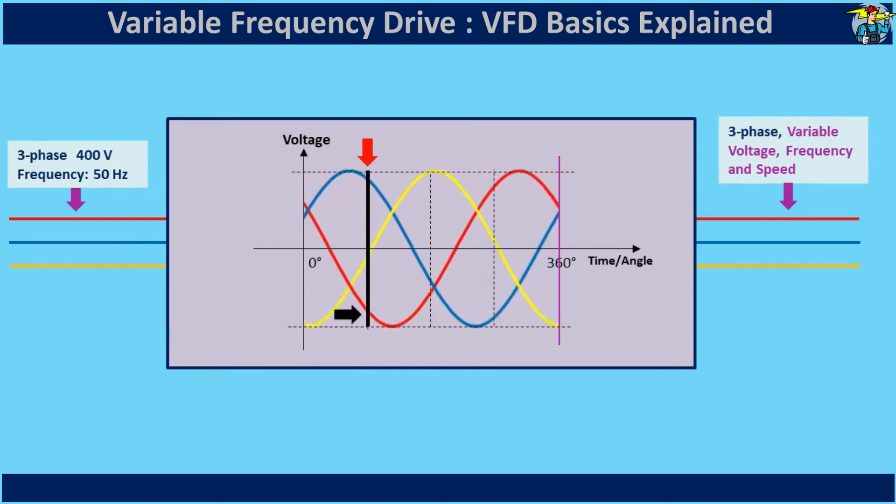The algebraic sum, that is the values including the plus and minus signs of the red, blue, and yellow phase sine waves, is zero at any point on this graph.